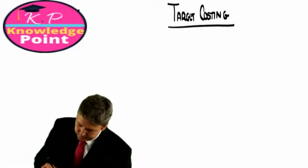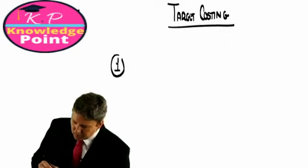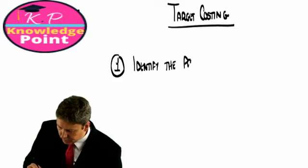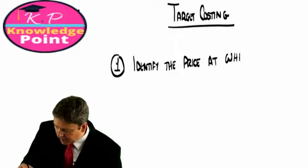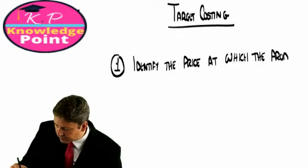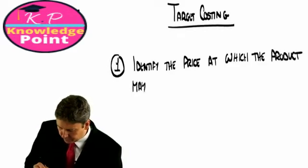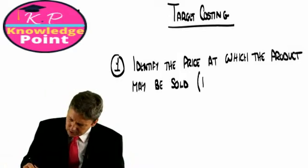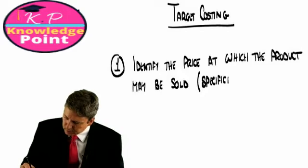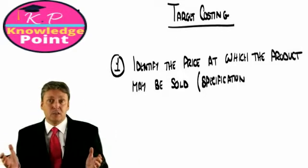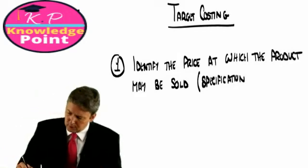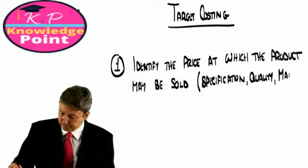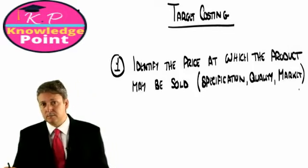So it goes something like this. Step one, we identify the price at which the product may be sold. Now, what sort of things will impact on that price? Things such as the specification of the product - when I say specification here, I mean the gadgets that the product may offer. The quality of the product and, of course, the marketplace as well, the state of the market.